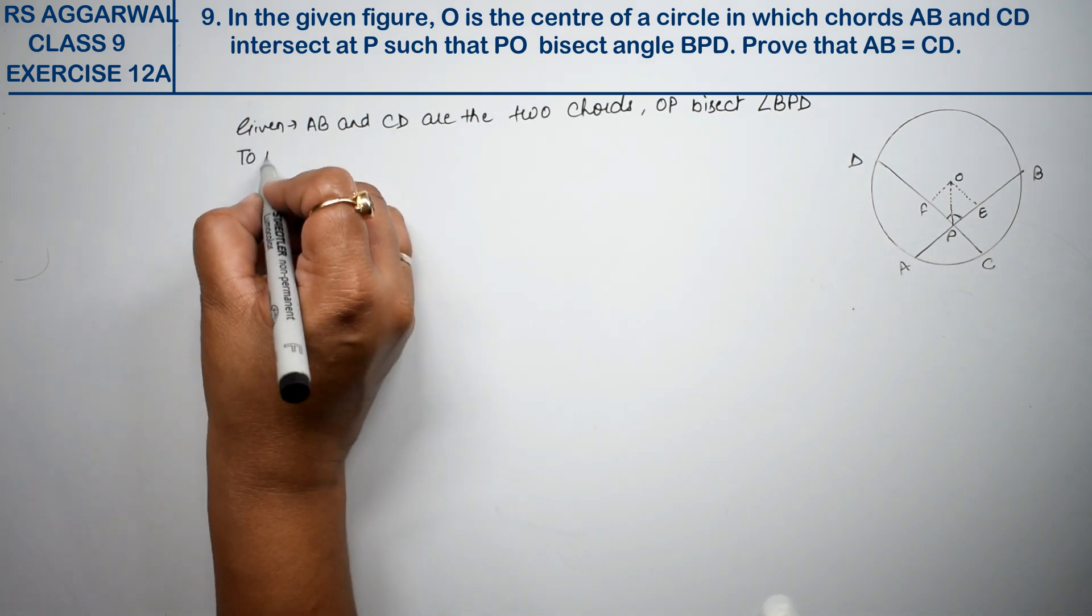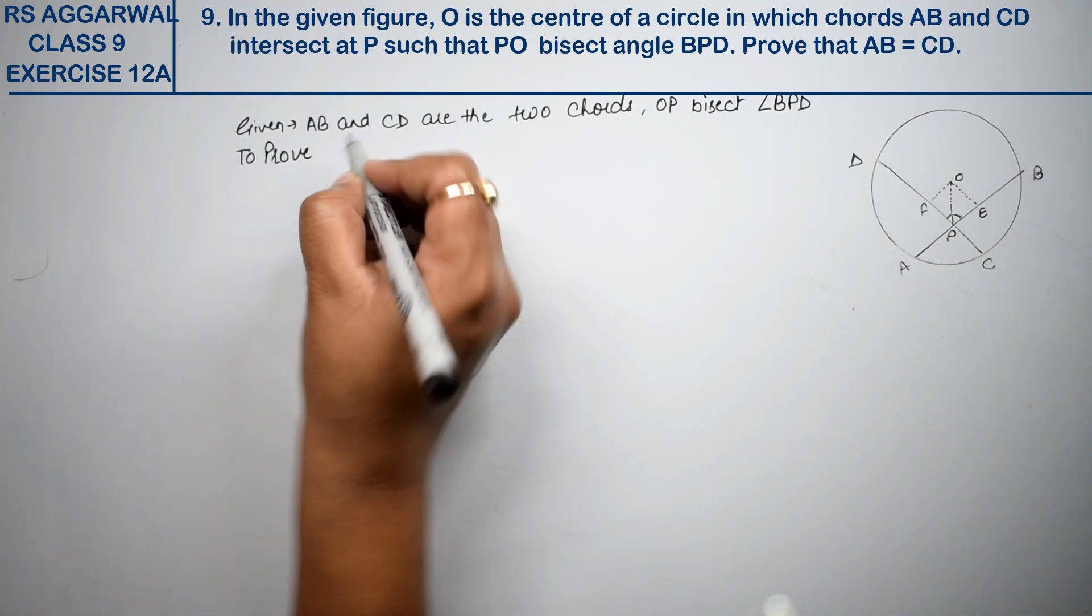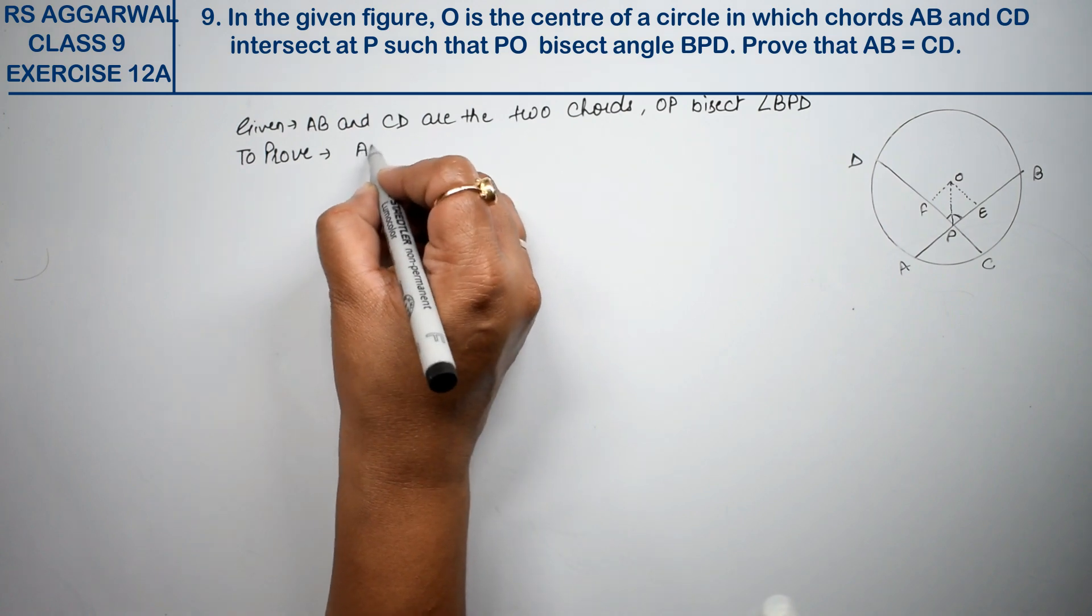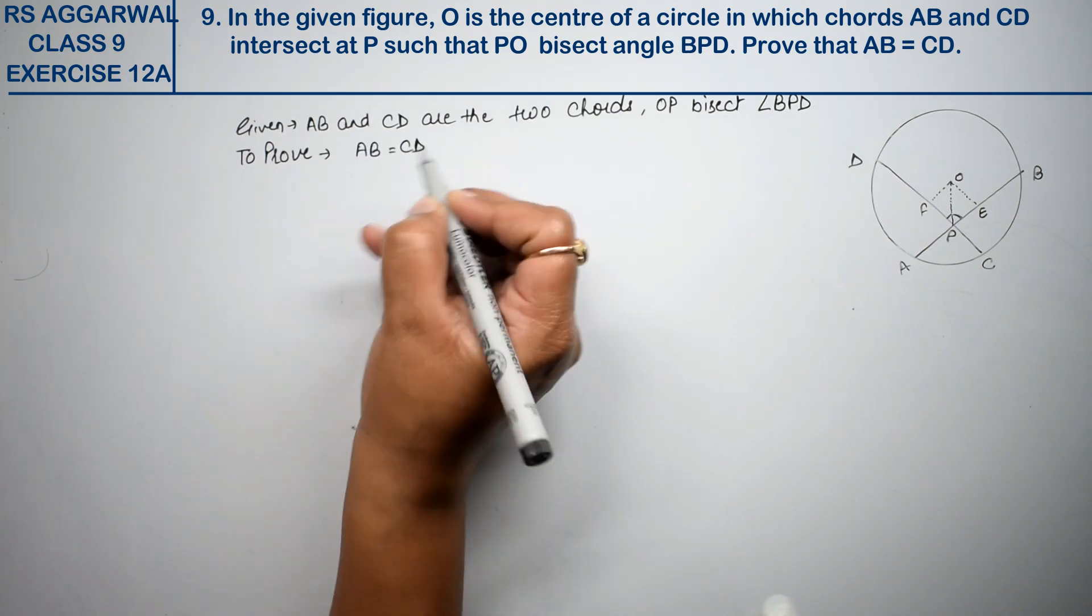And what do we have to prove? To prove that AB equals to CD. Now look at the construction.